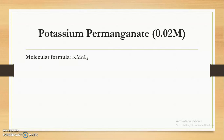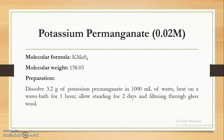So many titrations use Potassium Permanganate to carry out the determination of different reducing agents. The molecular formula of Potassium Permanganate is KMnO4 and the molecular weight is 158.03. For preparation: dissolve 3.2 grams of Potassium Permanganate in 1000 ml of water, heat on a water bath for one hour, allow to stand for two days, and filter through glass wool or filter paper.